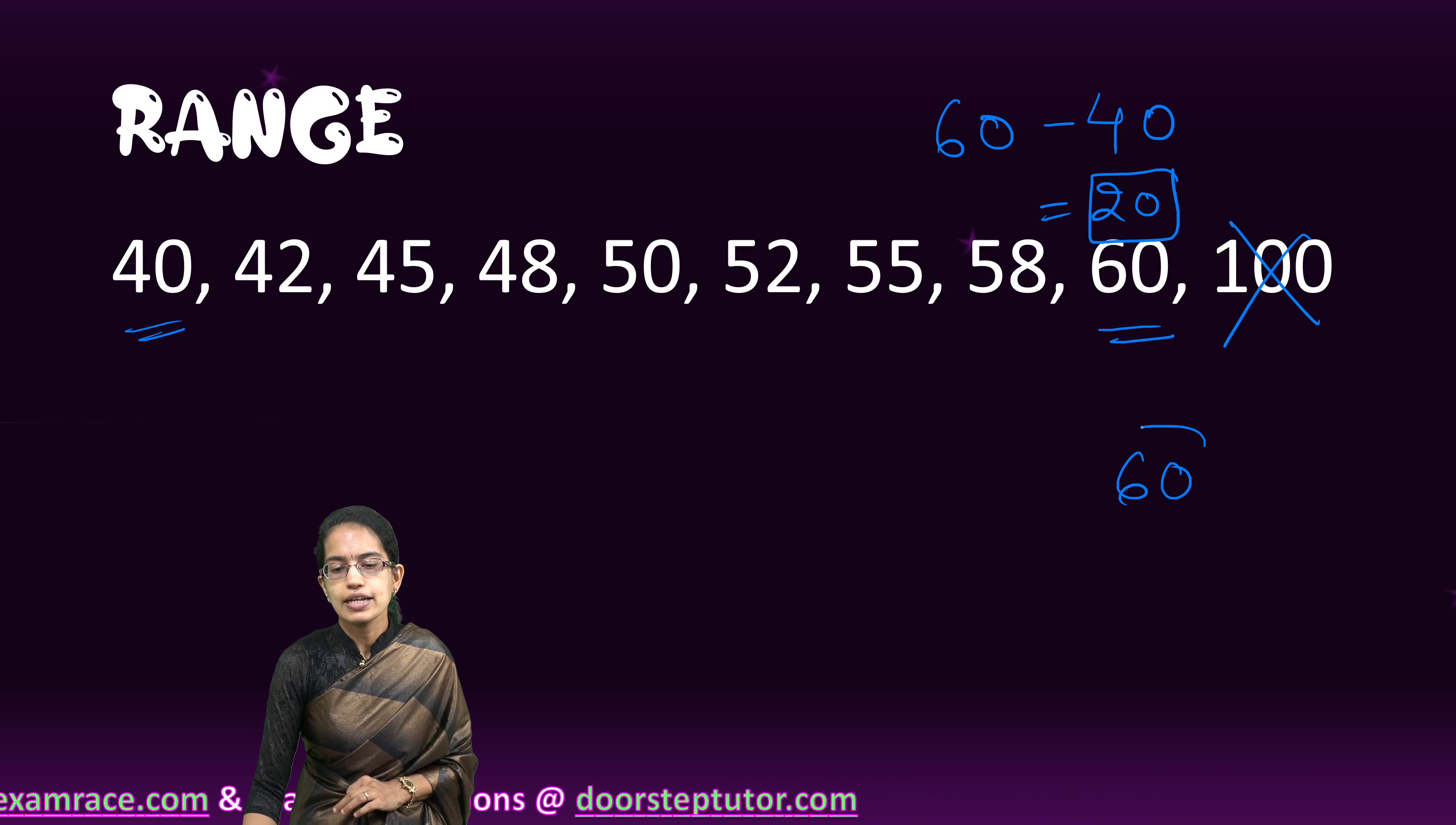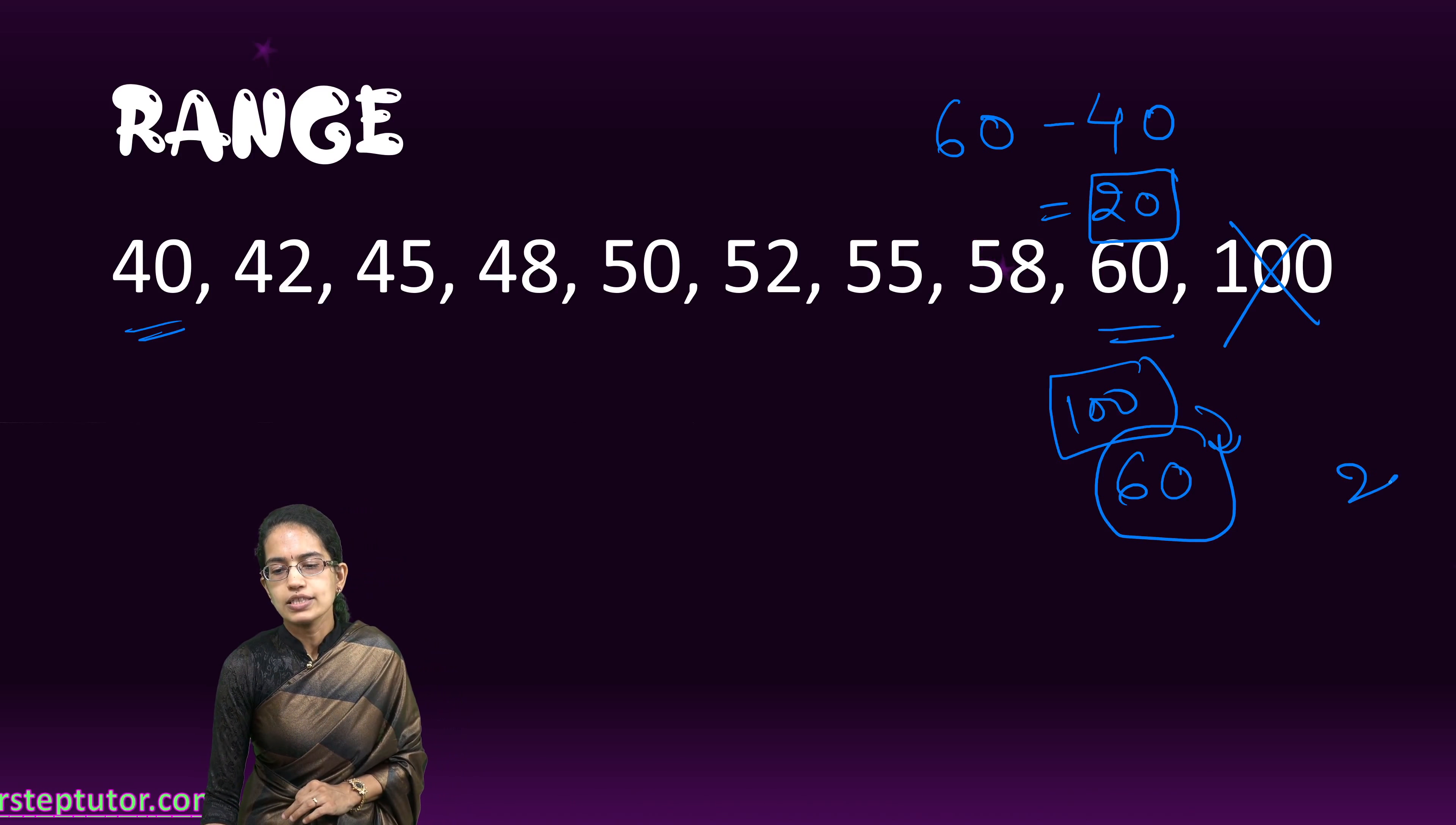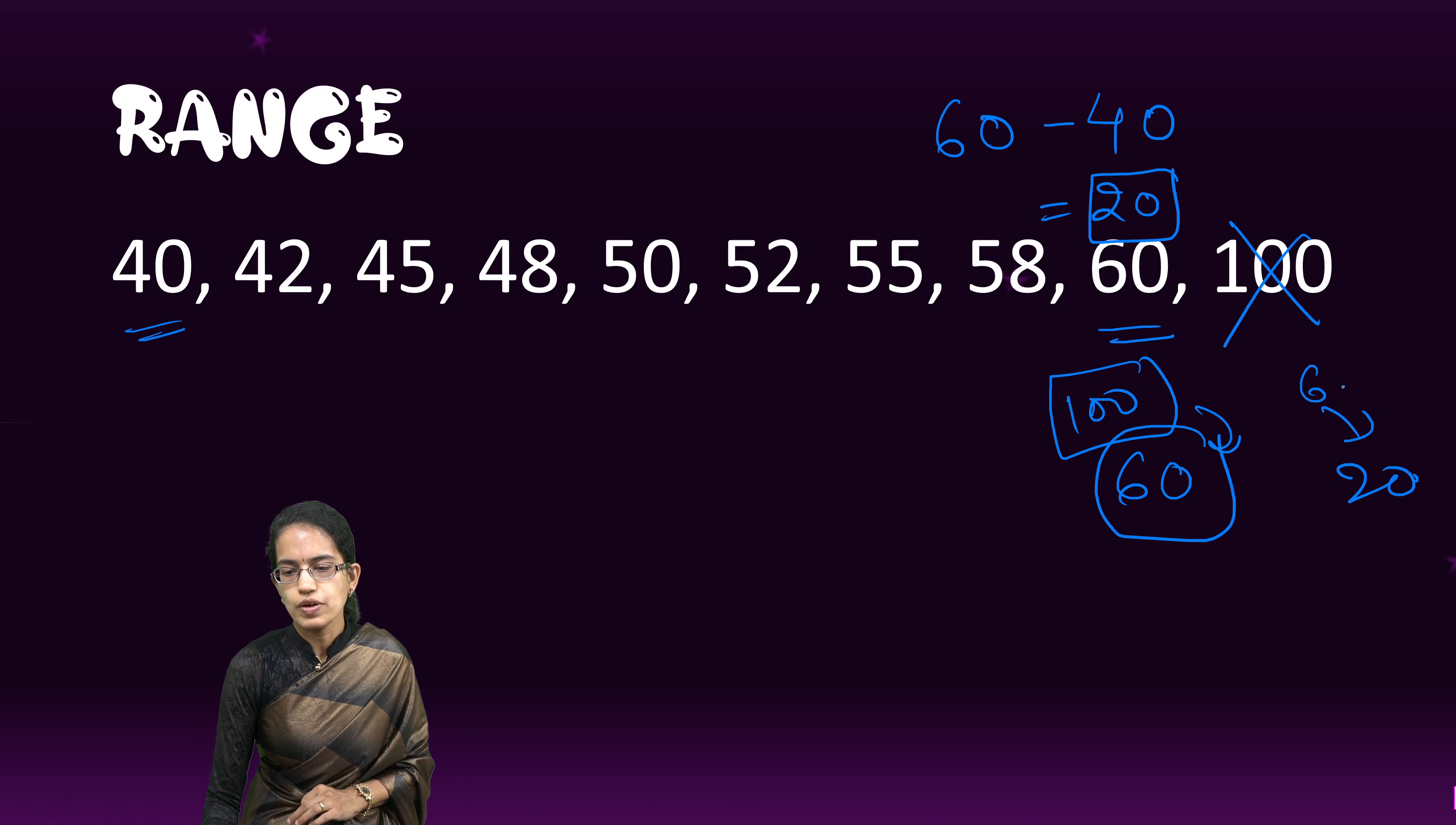In the prior case, I had a range of 60 because my extreme value was 100. Here, my range changes to 20 because my highest value is now 60.